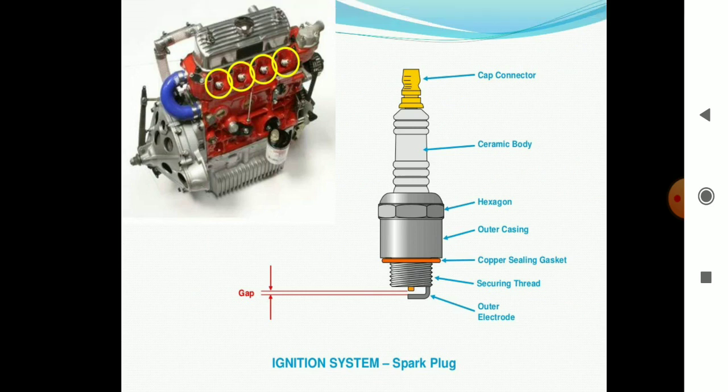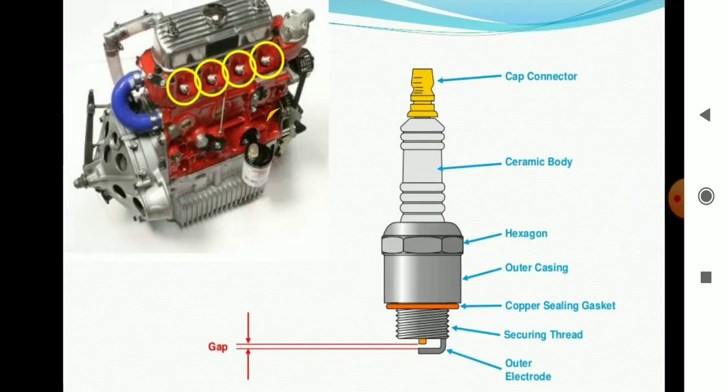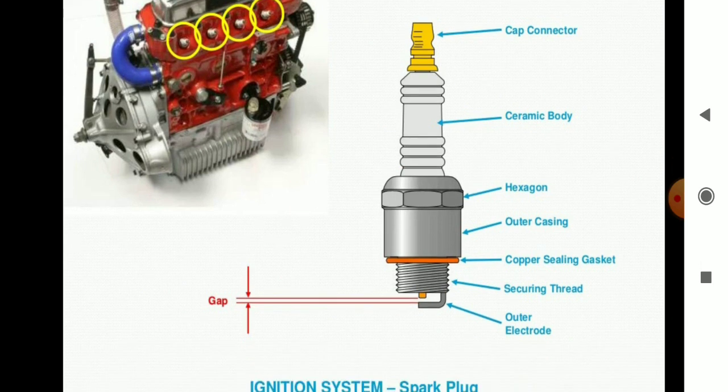The spark plug is the important aspect. In front of your screen you can see the spark plug and various different parts. The upper nib shown in yellow color is the cap of the connector. The white portion is called ceramic body of the spark plug. Then adjustment bolt is of hexagonal type, then outer casing, and at the nib we can see the copper sealing gasket which provides the seal to avoid oil or fuel touching the casing.